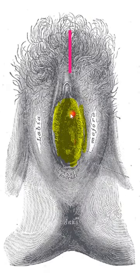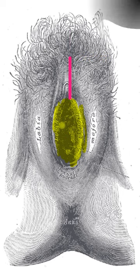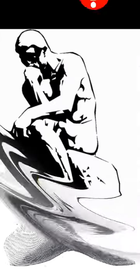In the female perineum, the vestibule is the space between the two labia minora. It receives the opening of the vagina and the external urethral meatus.